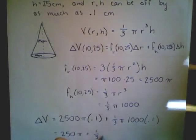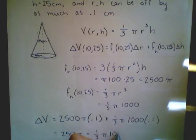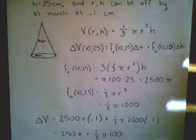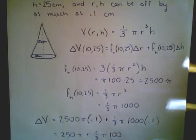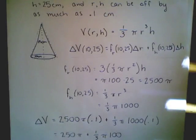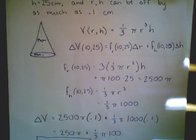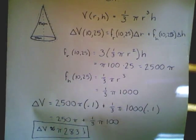That means I'm left with 250π plus (1/3)π(100). I could get a common denominator and calculate this out. I'm going to factor out the π. This is pretty close to 250 plus 33 and 1/3, which becomes 283 and 1/3 times π, which is the total possible error in volume.